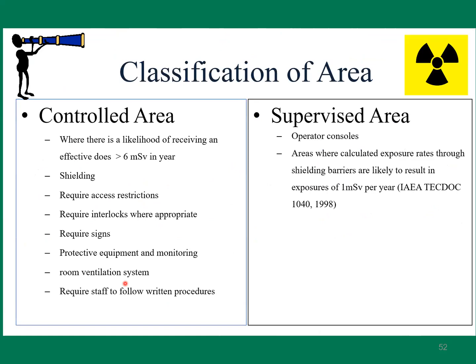Classification of areas: controlled area versus supervised area. A controlled area is where there is a likelihood of receiving an effective dose greater than 6 mSv. It requires shielding, access restriction, interlocks, signage, protective equipment, room ventilation, and staff to follow the radiology process. A supervised area — such as operator consoles — is where calculated exposure rates through shielding barriers result in exposure of approximately 1 mSv.